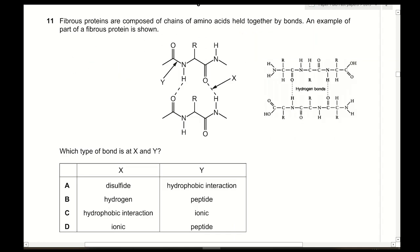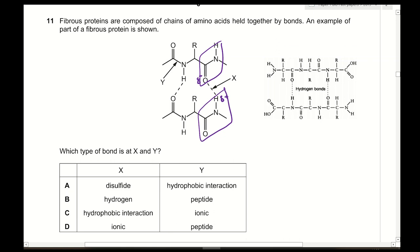Question 11: Fibrous proteins are composed of chains of amino acids held together by bonds. Which type of bond is at X and Y? At X, we can clearly see a hydrogen bond occurring between the partially positive hydrogen atom and the partially negative oxygen atom within the peptide bond — this is secondary structure hydrogen bonding. At Y, we can see a peptide bond, formed in the primary structure of proteins. The answer is B.